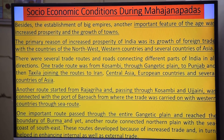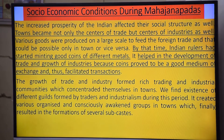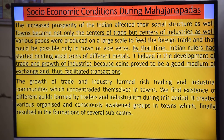Magadha developed better trade routes, and this increased prosperity affected their social structure as well. Towns became not only centers of trade but centers of industry. More trade meant more demand to produce goods, which led to industrialization. The second urbanization started when the 16 Mahajanapadas began to emerge.